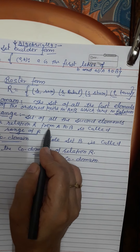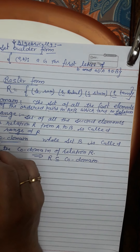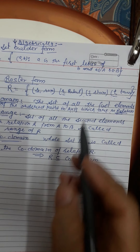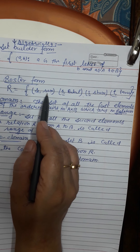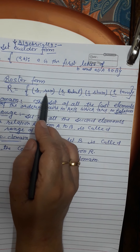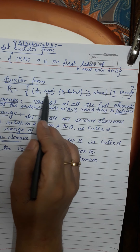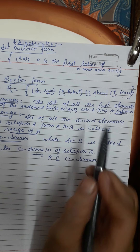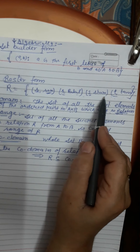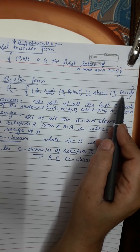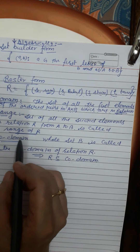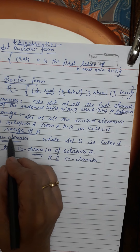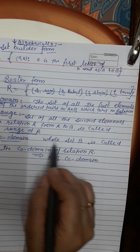Now what is range? The set of all the second elements of ordered pairs in relation R from A to B is called the range of R. So Ram, Rahul, Shyam, and Tarun form the range.